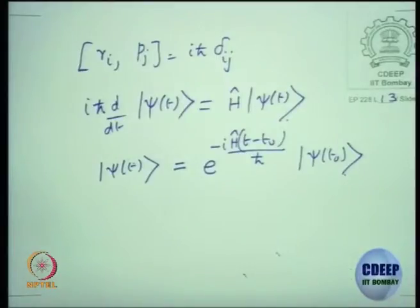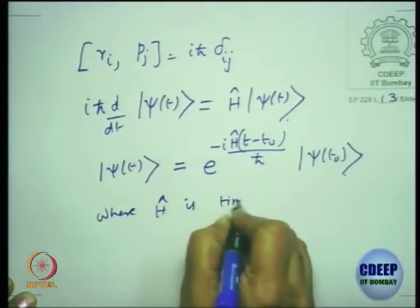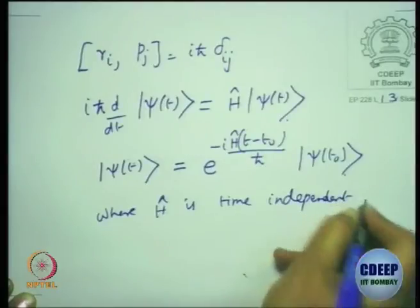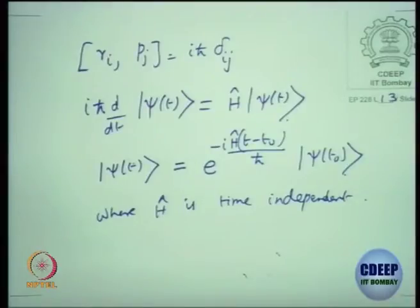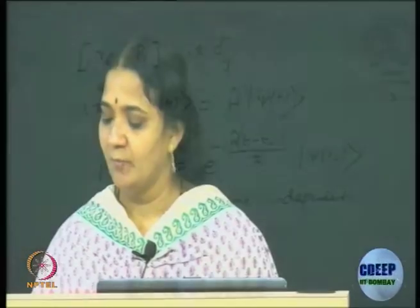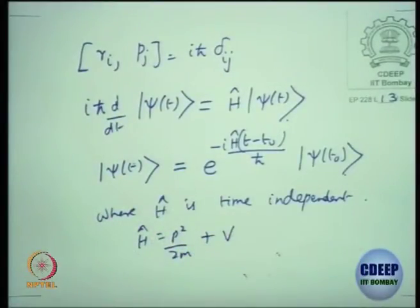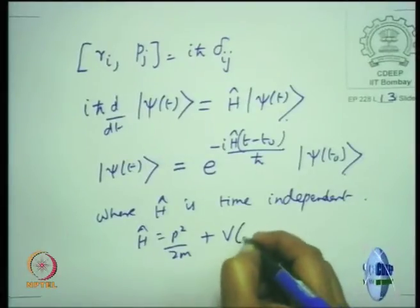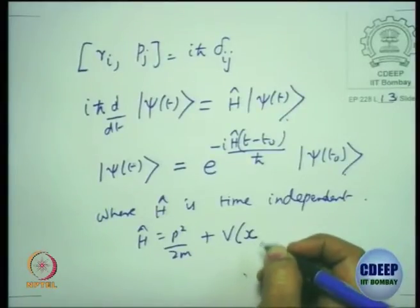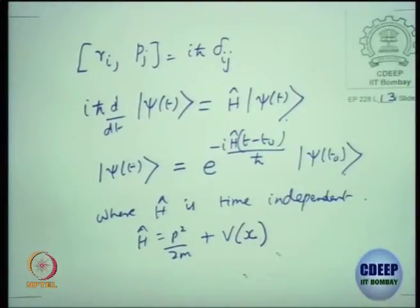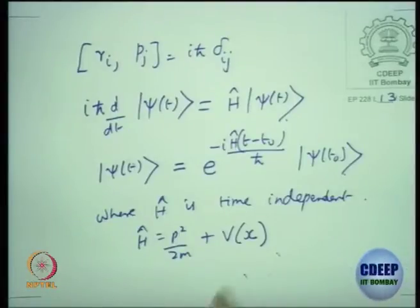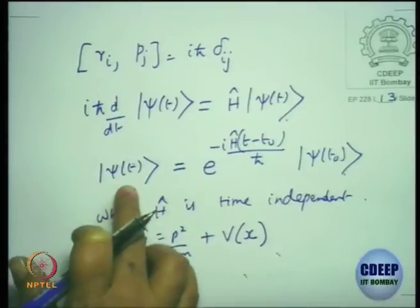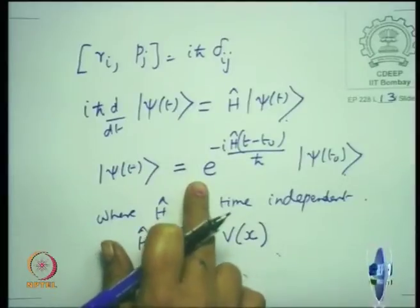If the Hamiltonian is time-independent, you can rewrite the solution as |ψ(t)⟩ = e^{−iH(t−t₀)/ℏ} |ψ(t₀)⟩. This is very important — H is made of kinetic energy plus potential energy. We are doing non-relativistic quantum mechanics, so H = p²/2m + V. In principle V can be a time-dependent electric field, but here we consider it to be dependent only on x, as in simple systems like the hydrogen atom and harmonic oscillator.